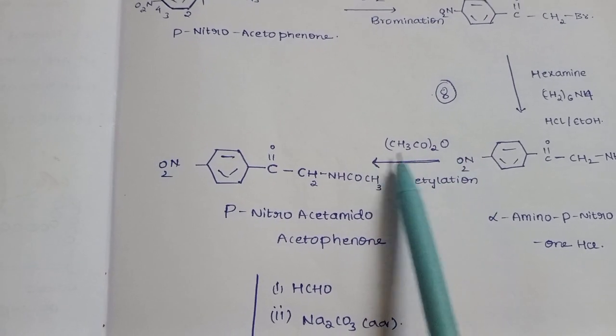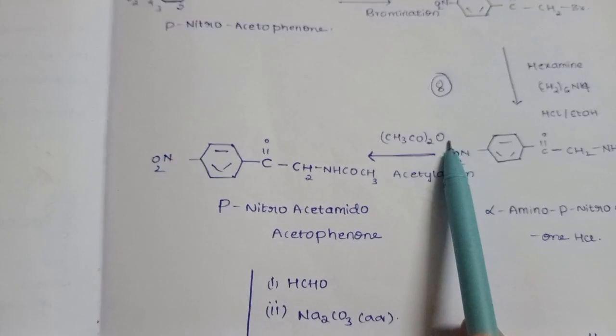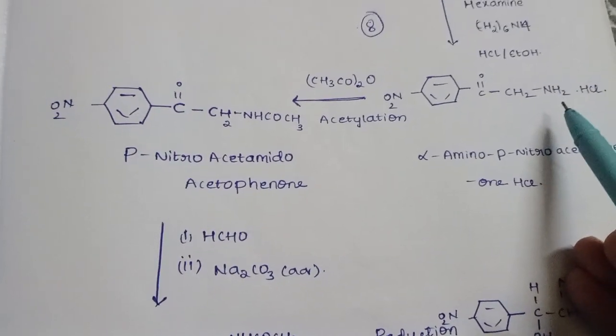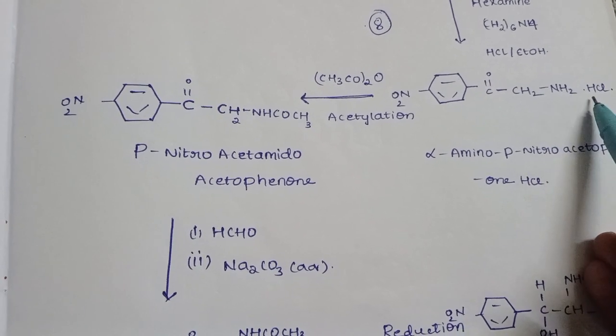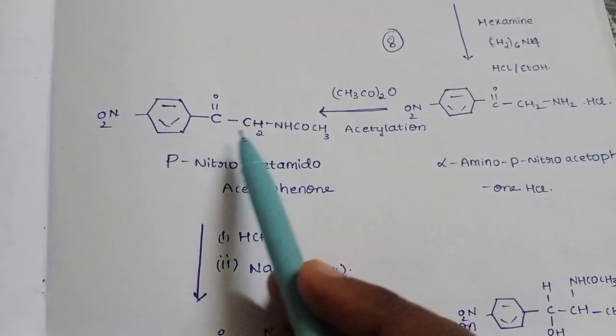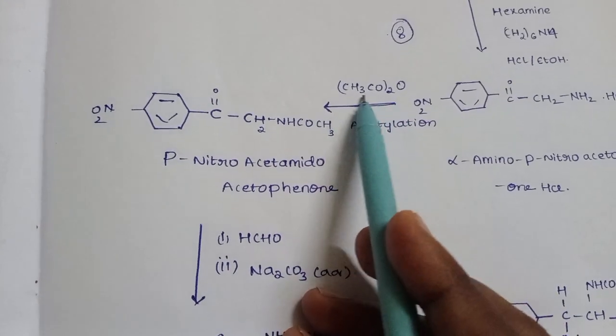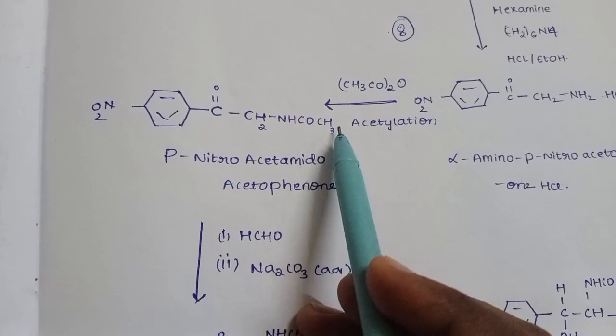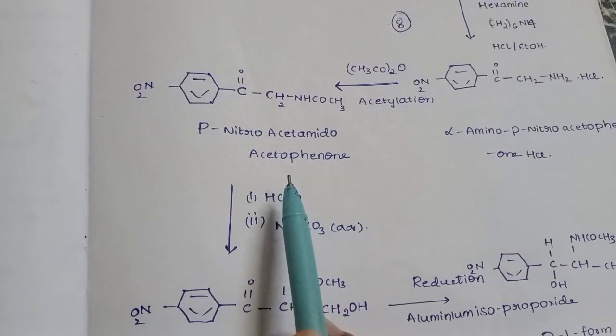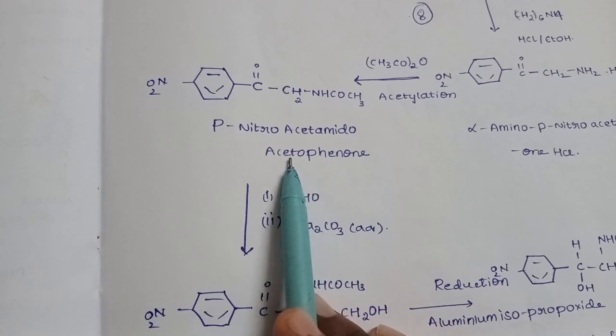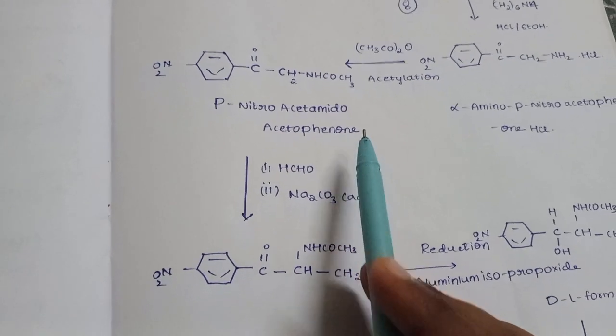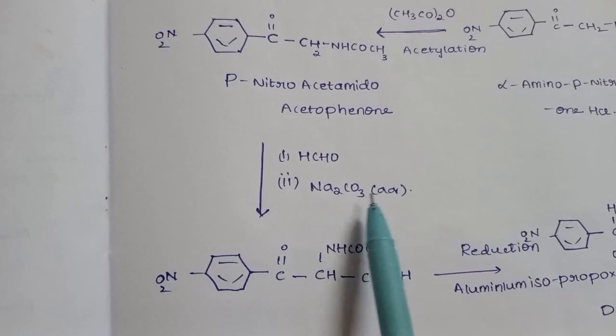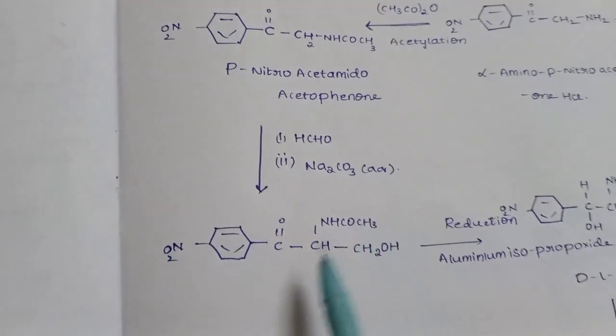Acetylation is done with (CH3CO)2O. This forms p-nitro acetamido acetophenone. In the presence of formaldehyde, HCO, and sodium carbonate in aqueous form, we need to convert this.